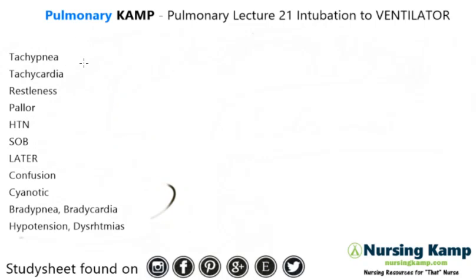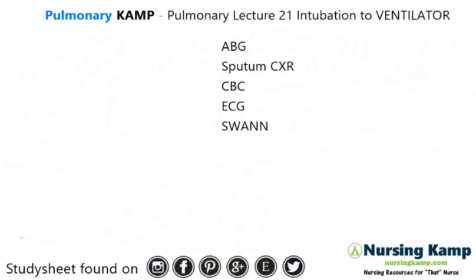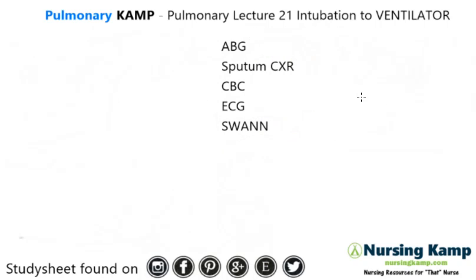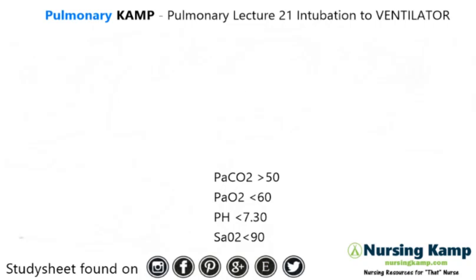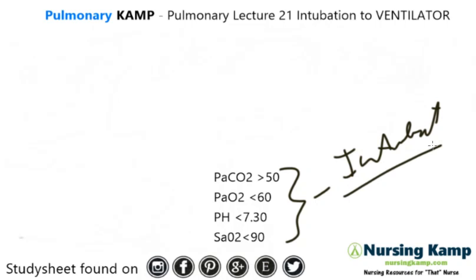We need to draw some blood work to see where that patient is. That's in the form of an ABG, a sputum possibly, chest x-ray, CBC, and ECGs. We might also anticipate swans depending on the underlying condition. From those results we get a blood gas, and from that data we will either intubate or use more invasive mechanisms to ventilate that patient.